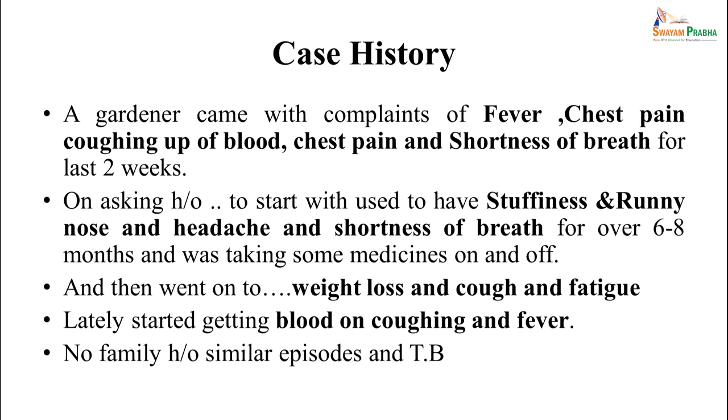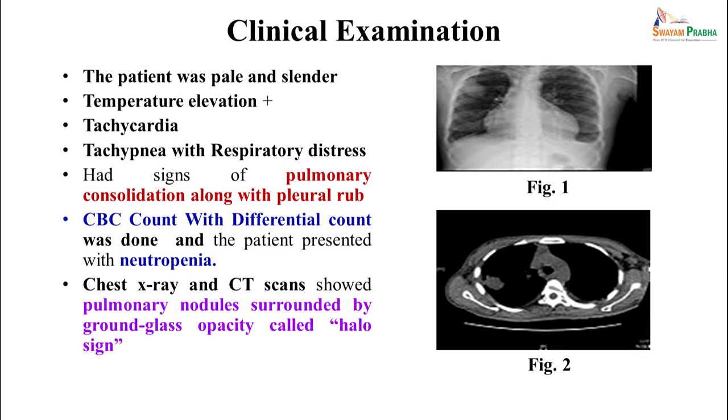Over time the cough remained, he did not improve, there was weight loss, the patient felt fatigued on little tasks, and he started coughing blood in his sputum and also developed fever. There was no family history of similar episodes or tuberculosis. On examination, the patient was pale and slender, had high fever and tachycardia, tachypnea with respiratory distress, and signs of pulmonary consolidation along with pleural rub.